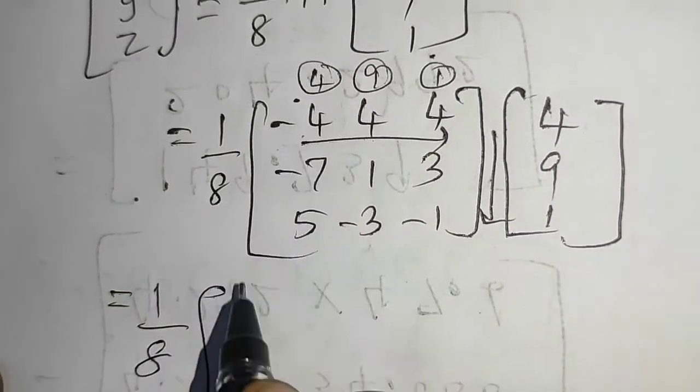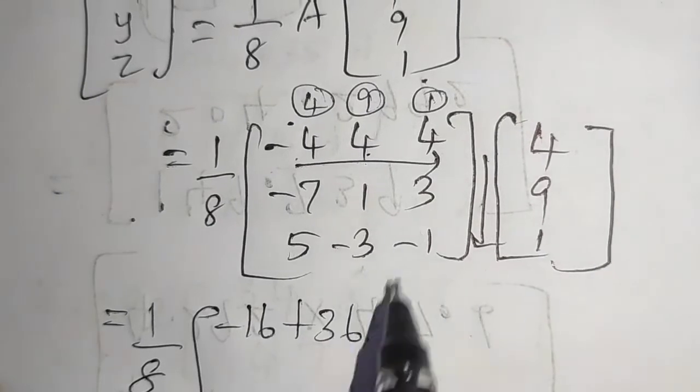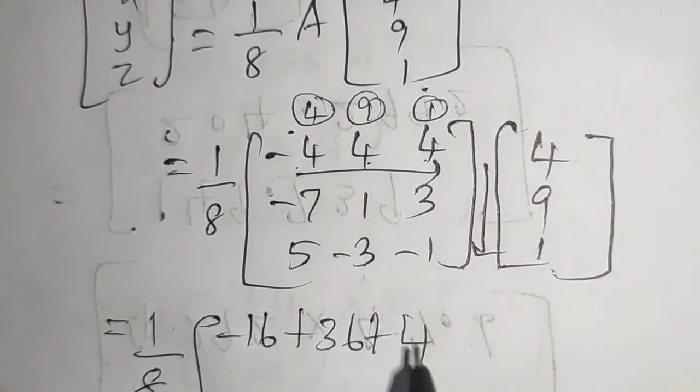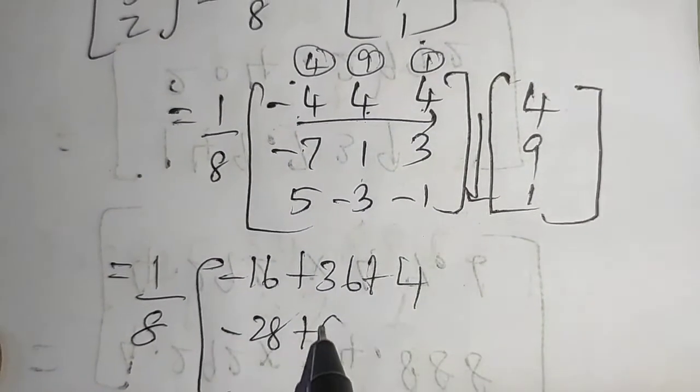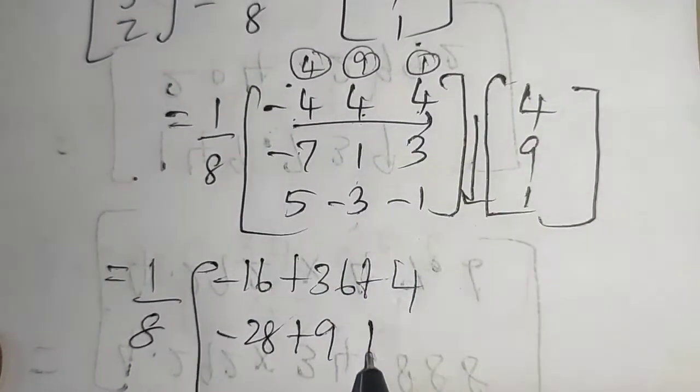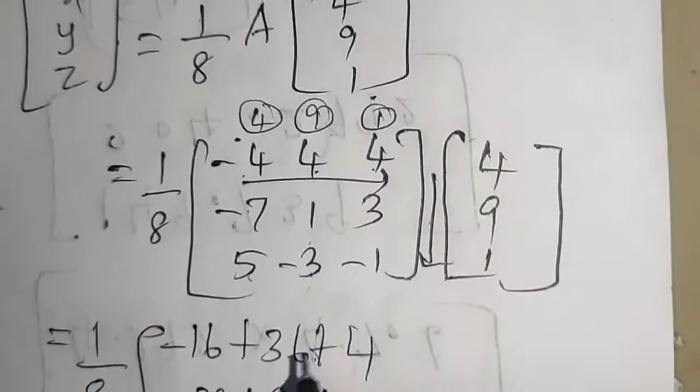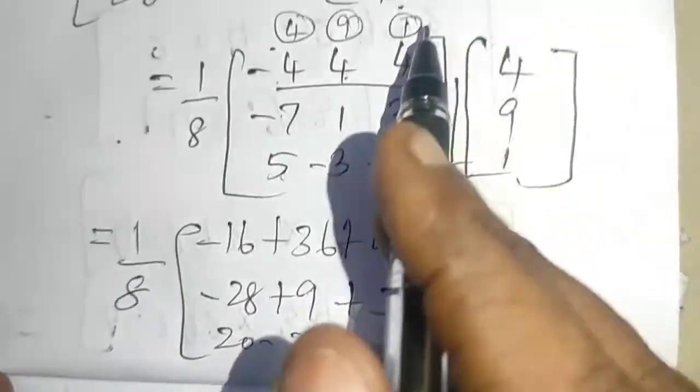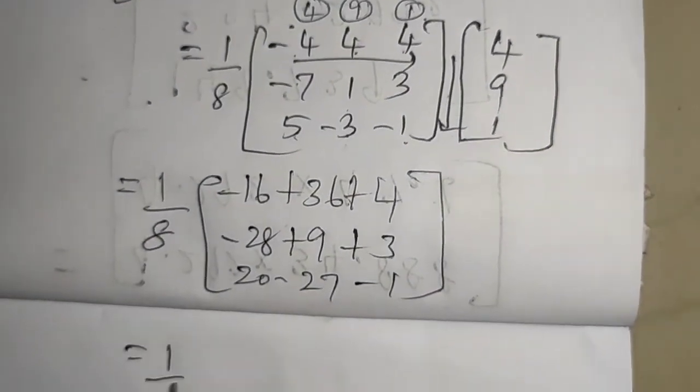4 into minus 4 is minus 16, plus 9 times 4 is 36, plus 1 times 4 is 4. 4 into minus 7 is minus 28, plus 9 times 1 is 9, plus 1 times 3 is 3. 4 into 5 is 20, 9 into minus 3 is minus 27, 1 into minus 1 is minus 1.